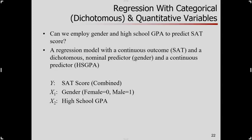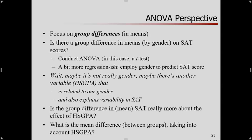Let's look at what we're doing through the lens of analysis of variance, which is all about group differences. Can we employ these predictors to predict the outcome? We've got this regression model with the outcome, a grouping variable, and a continuous predictor. If we're going to take an analysis of variance perspective, we're going to focus on group differences in the means. That's what ANOVA is really about — do these groups differ in their means, on average?